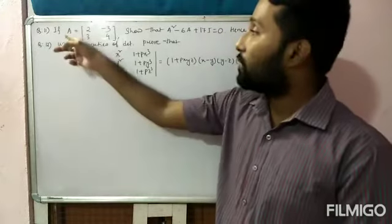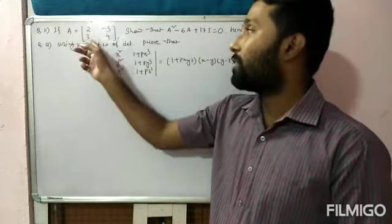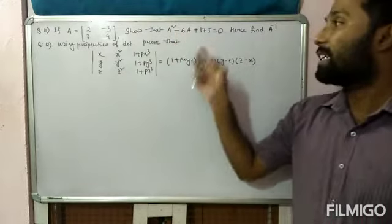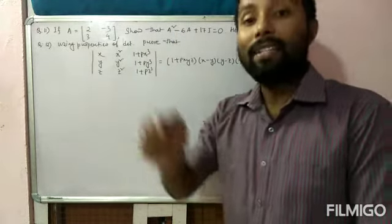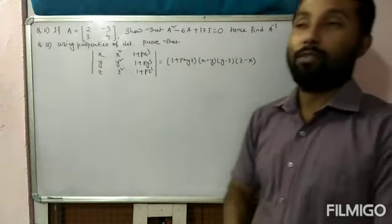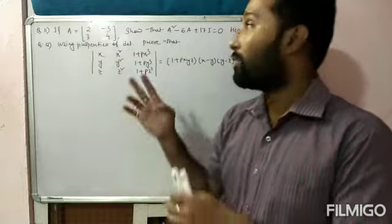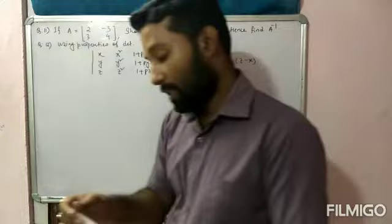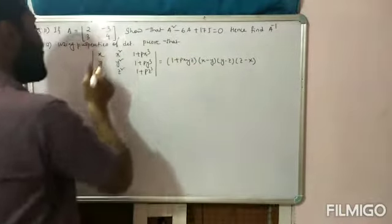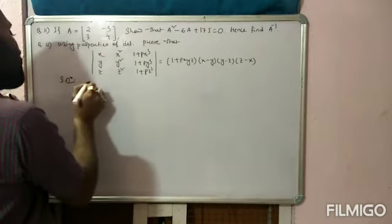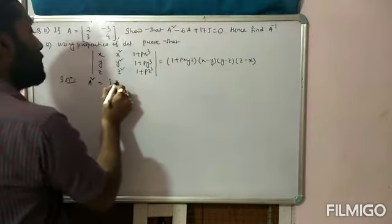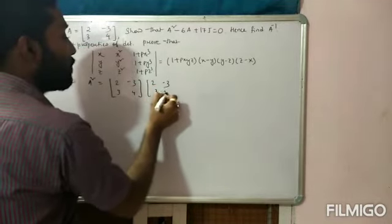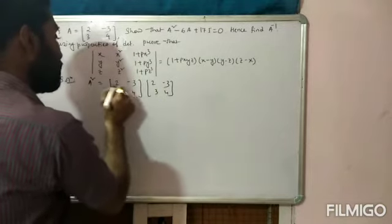Question 11 (four/six mark): if A = [2, −3; 3, 4], show that A² − 6A + 17I = 0 and hence find A⁻¹. Since A is given, first find A² = [2,−3;3,4]×[2,−3;3,4]. Computing: first row gives [4−9, −6−12] = [−5, −18]; second row gives [6+12, −9+16] = [24, 7]. So A² = [−5, −18; 24, 7].